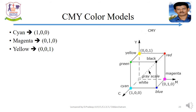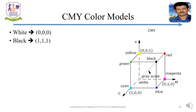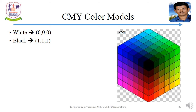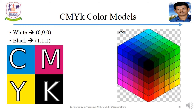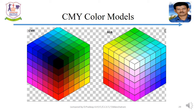Based on the three CMY components, other colors can be achieved. Blue is achieved by combining cyan and magenta. Red is achieved by combining magenta and yellow. Green is achieved by combining yellow and cyan. White is (0, 0, 0) and black is (1, 1, 1). Generally, the CMY color model is represented as CMYK, where K represents black. It is used in printers. Conversion between CMYK and RGB color models is possible.